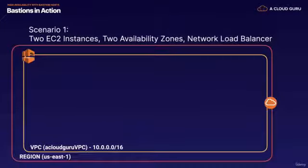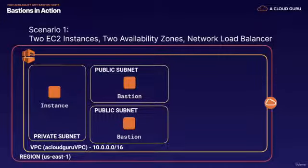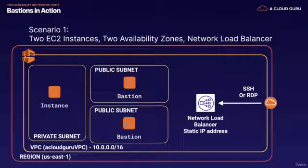Scenario one is a really simple one. We've got two EC2 instances — let's say we've got our instance in a private subnet, this might be our database instance — and then we have two EC2 instances, both in separate availability zones. Then we have a network load balancer with a static IP address. The reason we're using a network load balancer instead of an application load balancer is when you're SSH-ing or RDP-ing in to your Bastions, it's a layer 4 connection, so you can't have a layer 7 load balancer. We basically SSH into our network load balancer on its static IP address, and then it load balances between our two different Bastions in different availability zones.